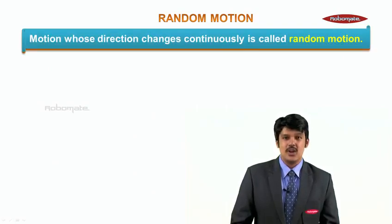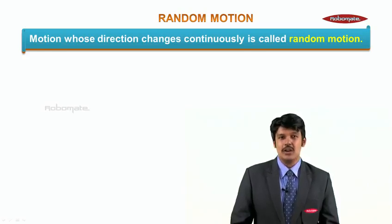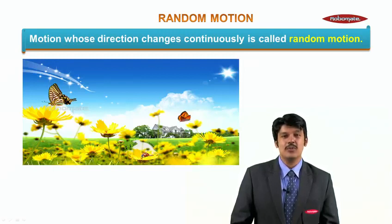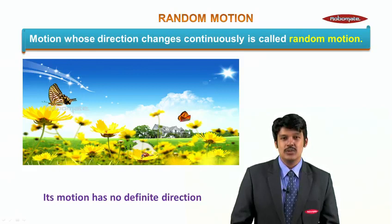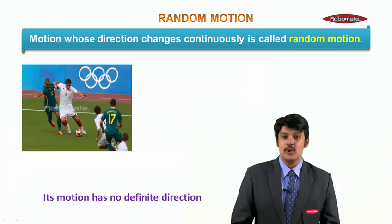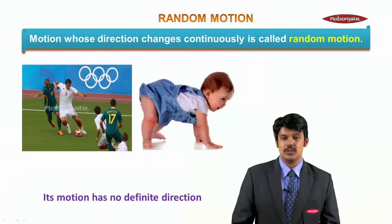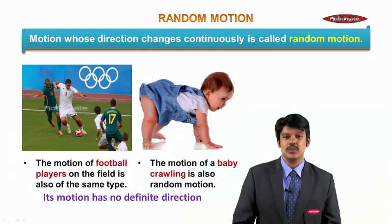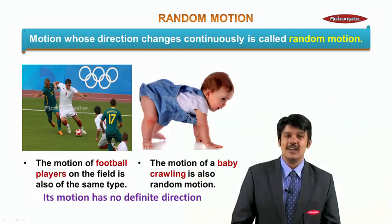Let us now learn random motion — a motion whose direction changes continuously is called random motion. A beautiful example is a butterfly flying anywhere in the sky; its motion has no definite direction, so this is called random motion. A footballer playing on the field is the best example of random motion, as is a baby crawling on the ground — both have no definite direction, and so their motion is called random motion.